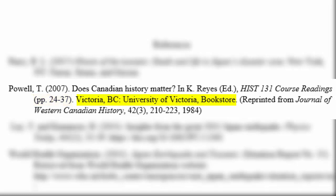Next, you'll list the city of publication and the publisher — in this case, the University of Victoria bookstore. Finally, in parentheses, you'll let the reader know where the work was reprinted from. In the case of a journal article, you'll include the name of the journal, the volume and issue, the original page range for the article, and the original year of publication.